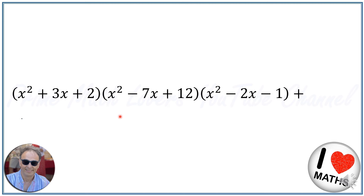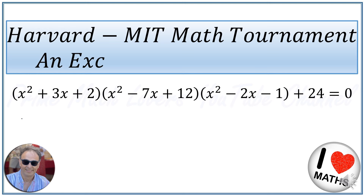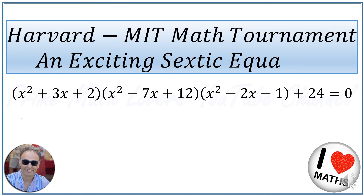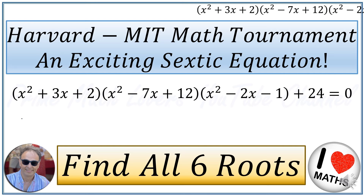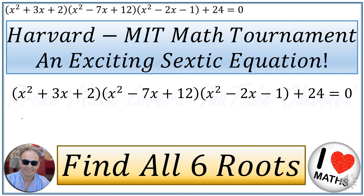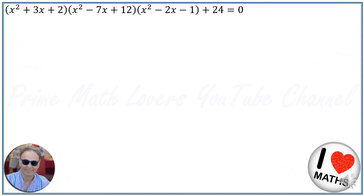Hi everyone, welcome to the Prime Math Lovers YouTube channel. Today we are going to solve this 6th degree equation: (x²+3x+2)(x²-7x+12)(x²-2x-1) + 24 = 0. This question is from the Harvard-MIT Math Tournament, and they want us to find all six roots. First, we are going to factorize all three factors.